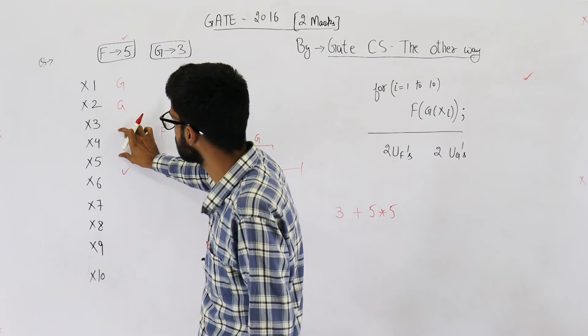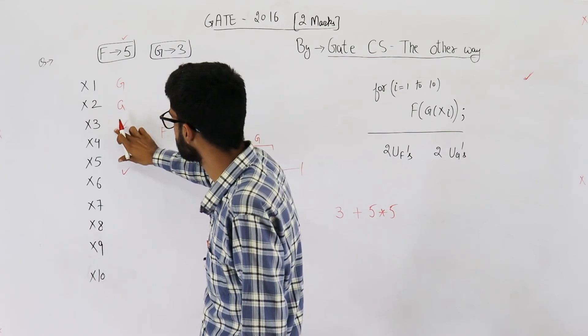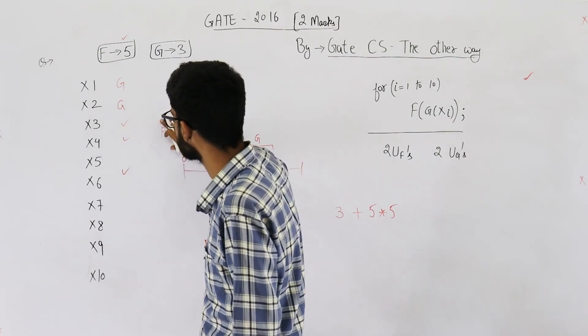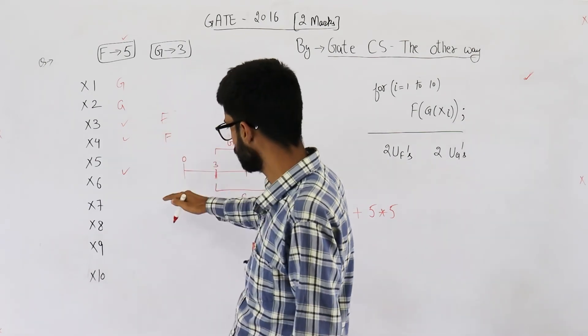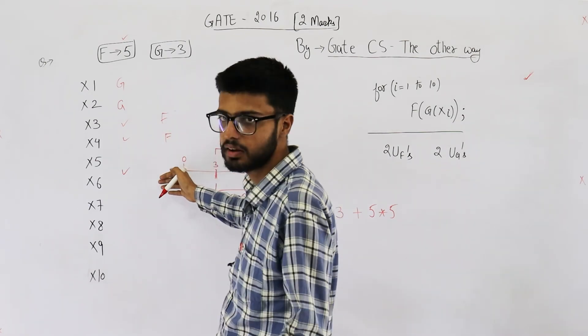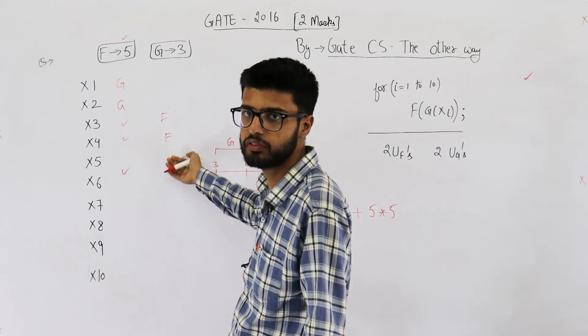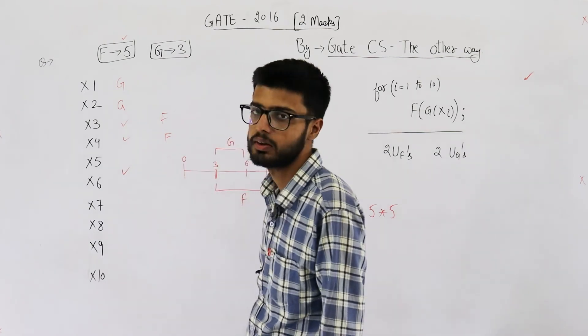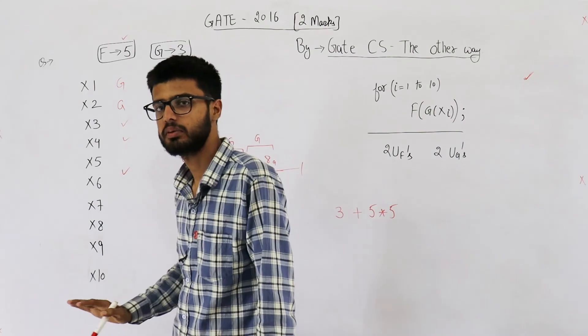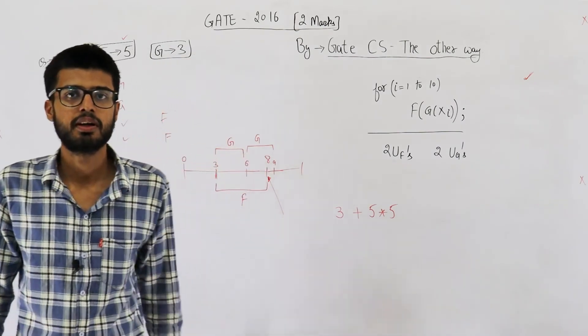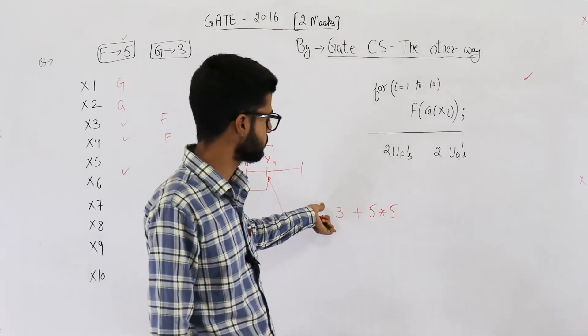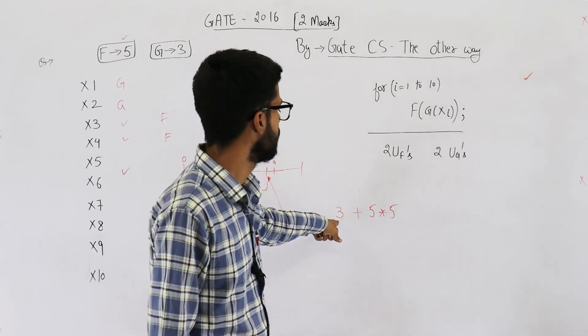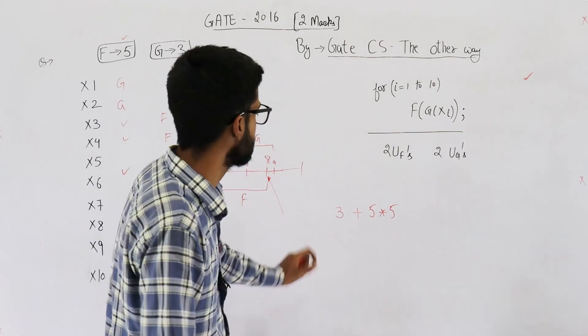Because, in those 8 seconds only, these two values would have been computed. Then, you just continue f with, continue the computation of f for another pair and so on. Because, g would have been computed while the unit f gets free. So, this is your answer. It comes out to be 25 plus 3, 28. Correct answer is 28.